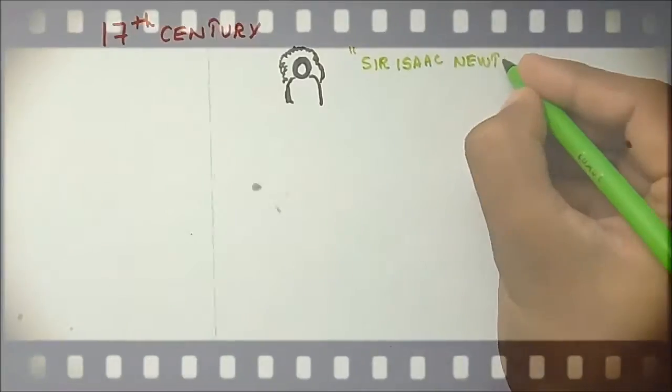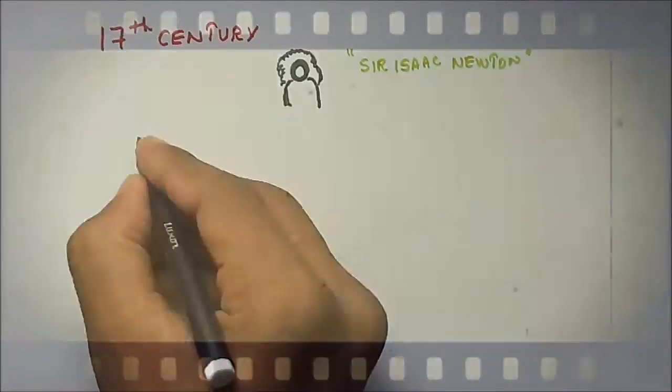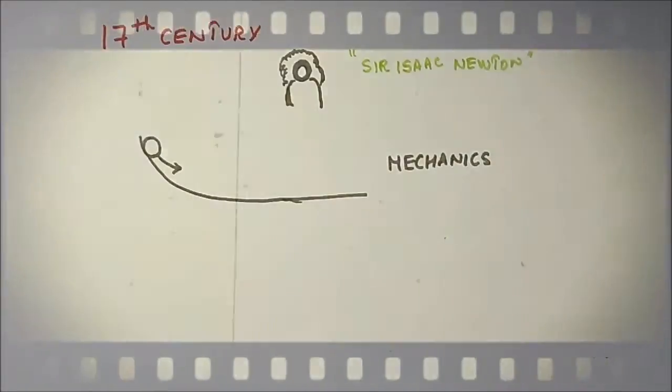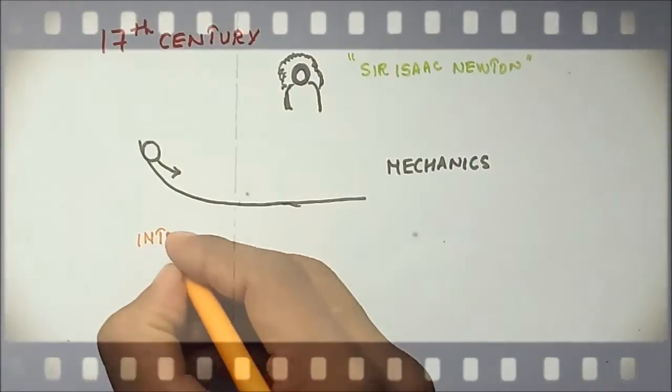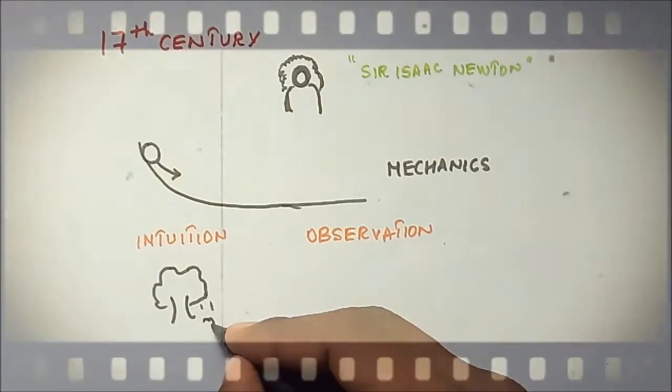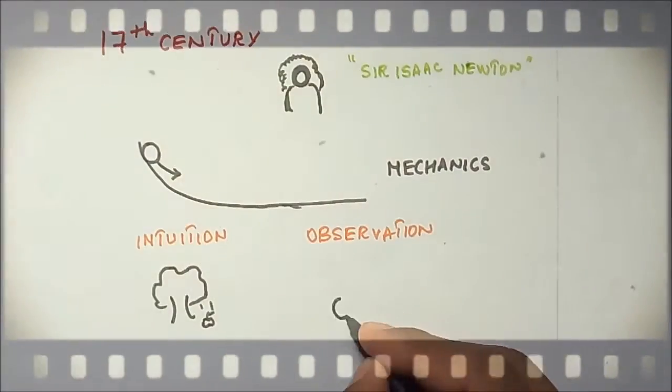In the 17th century, the great Sir Isaac Newton had formulated the three laws of motion. And guess what, he formulated the entire theory of mechanics just using his intuition, which he had developed through constant observation of motion of the objects around him.